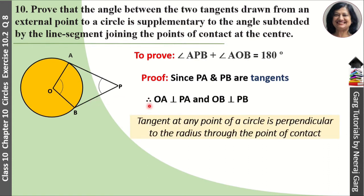So, OA is perpendicular to PA and OB is perpendicular to PB. This is because tangent at any point of a circle is perpendicular to the radius through the point of contact.